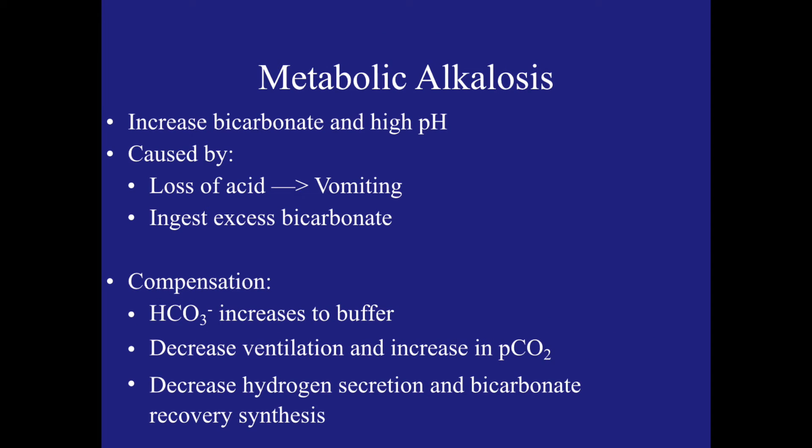Next we have metabolic alkalosis, and this is due to an increase in the arterial blood bicarbonate concentration to above 24 millimolar and to a pH greater than 7.42. This is caused by loss of fixed acid due to shallow vomiting — just the stomach contents, which are acidic — and also it could be caused by ingestion of excess bicarbonate.